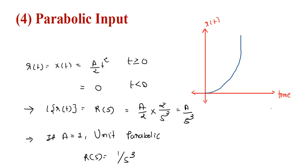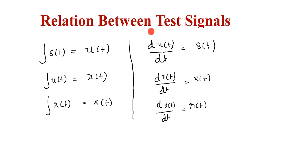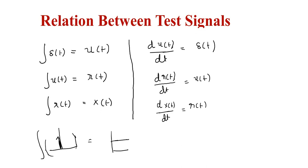These are the standard test signals for control systems. Now we discuss the relations between test signals. If we integrate the impulse signal it gives the step signal. If we integrate the step signal it gives the ramp signal. If we integrate the ramp signal it gives the parabolic signal. Similarly, by differentiating the step signal we get the impulse; by differentiating the ramp signal we get the step; and by differentiating the parabolic signal we get the ramp.